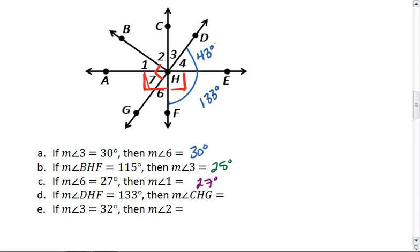If 4 is 43, then let's see, 3 and 4 are right angles, so 3 has to be 47 degrees. And then 2 and 3 are right angles, so 2 has to be 43 degrees.